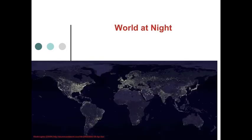This photograph, or series of photographs, which shows the world at night indicates where energy is being consumed throughout the world. As you can see, most of the energy is being consumed in the developed world including the United States, Europe, and Japan, but in the future we anticipate that the undeveloped world will be a major source of energy use. Most of the energy being spent here is fossil fuel energy.